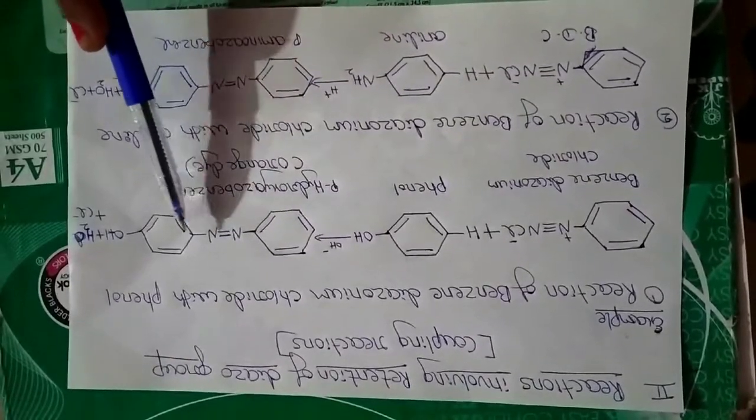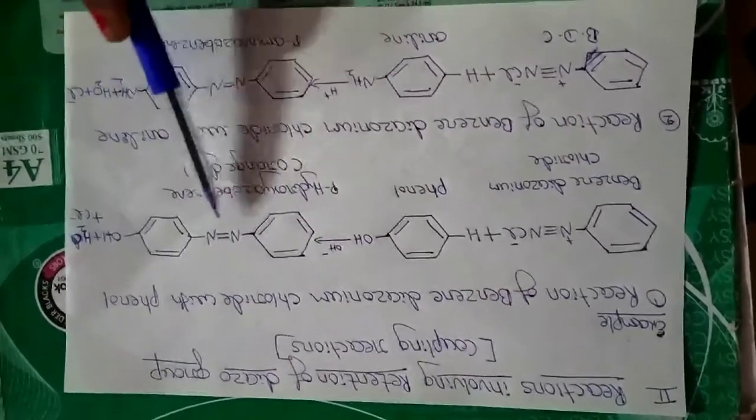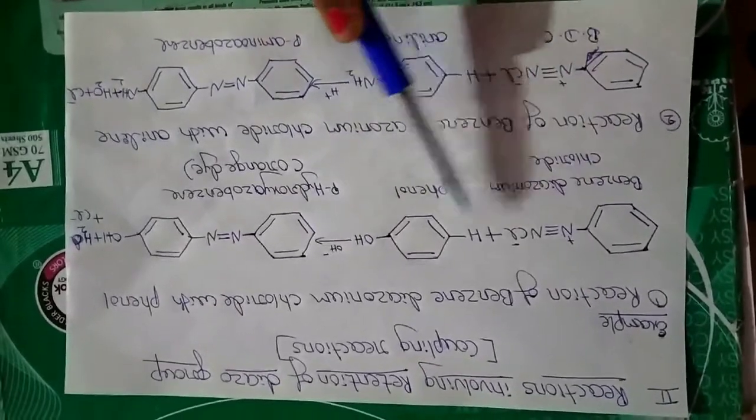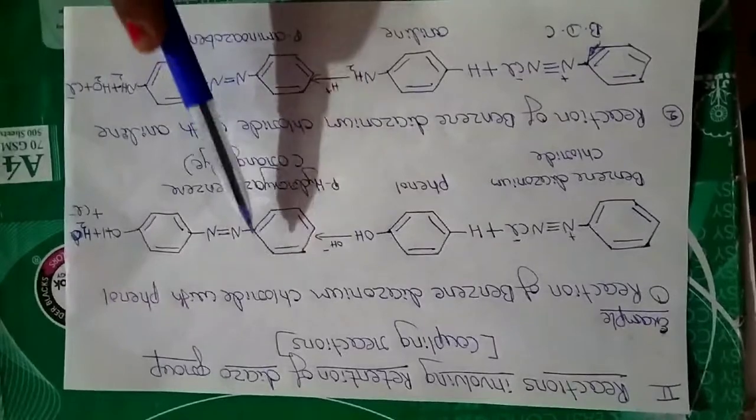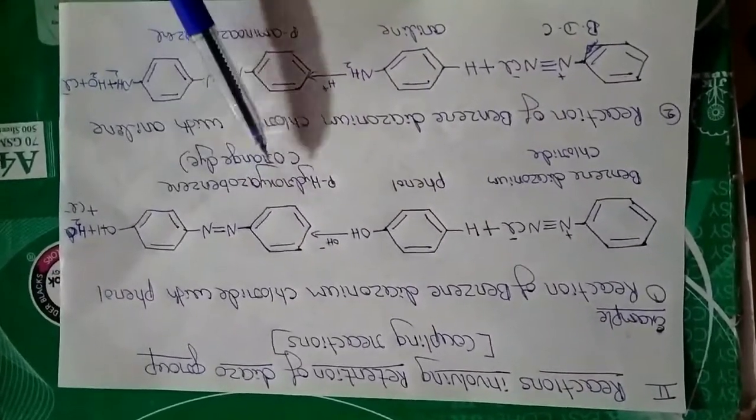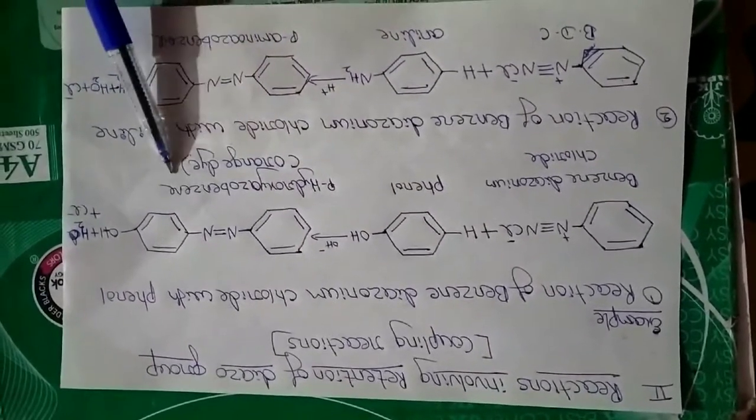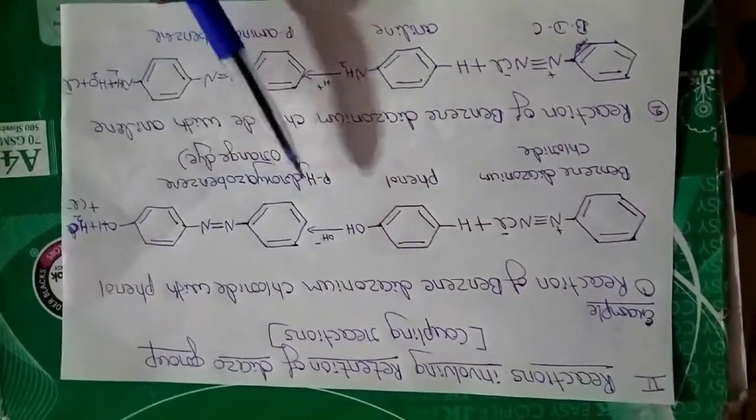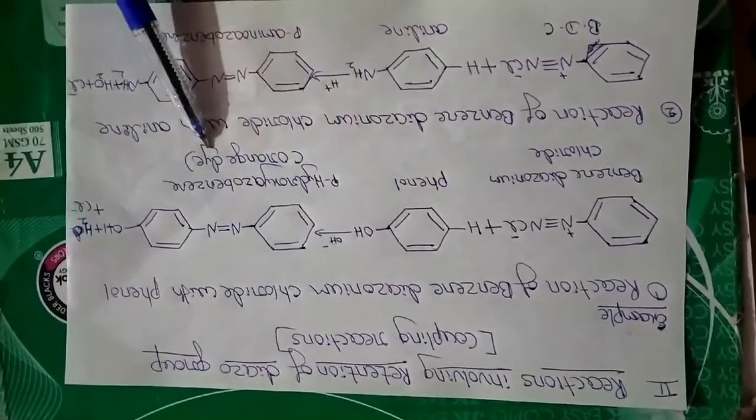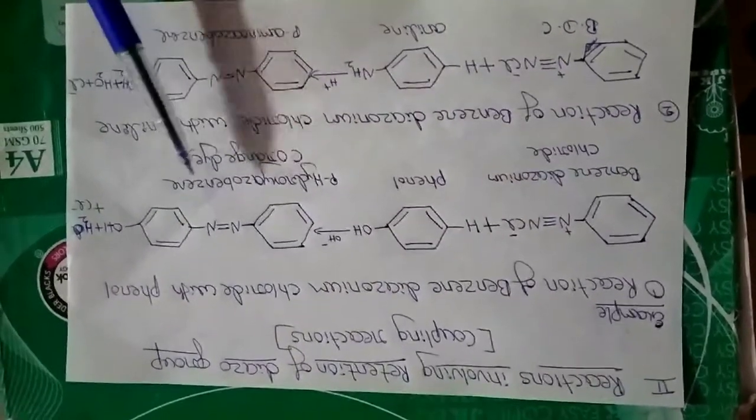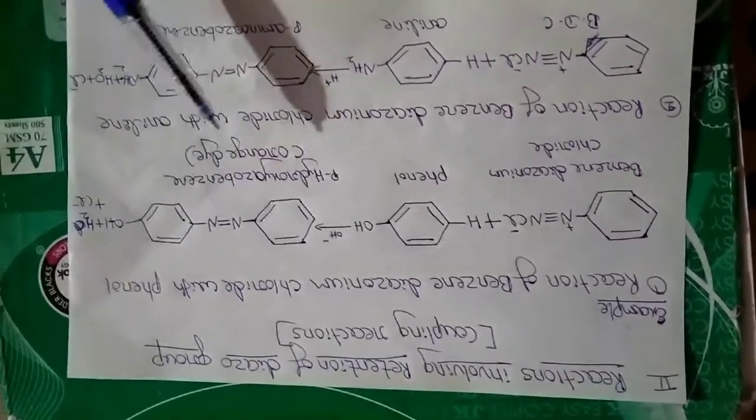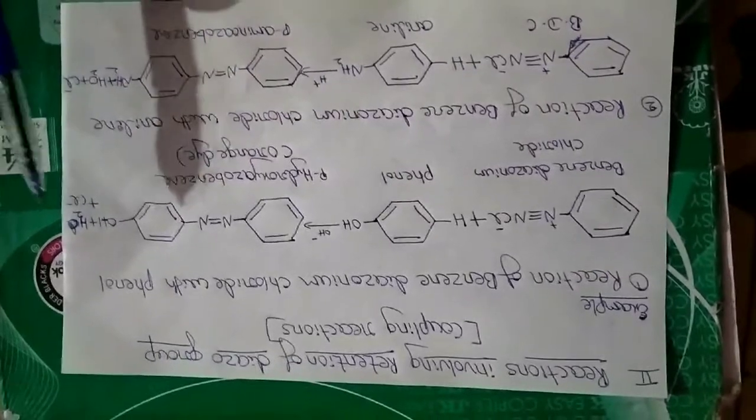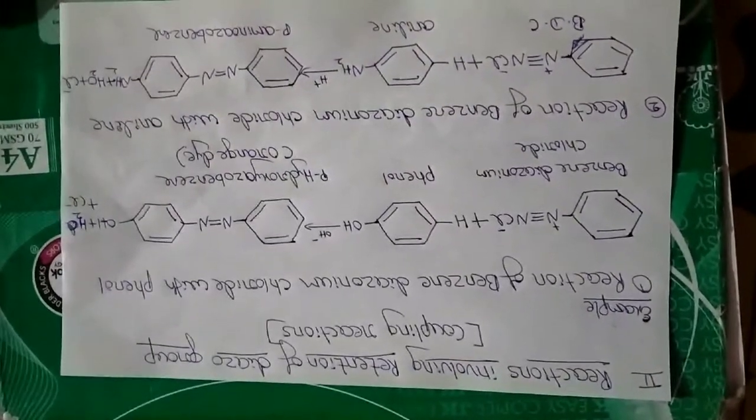When we compare the two compounds that react to form the product, in the product the conjugation is extended, which leads to the formation of colored compounds. This is the importance of coupling reactions. Why are the products formed in coupling reactions colored in nature? Because of the extended conjugation. This completes the reactions part of the chapter.